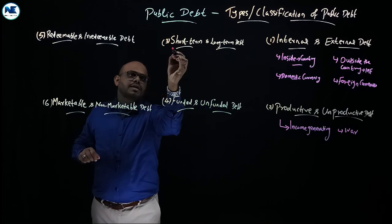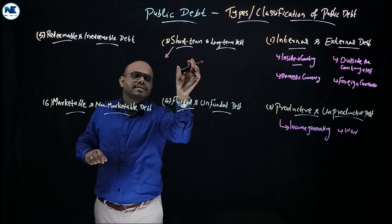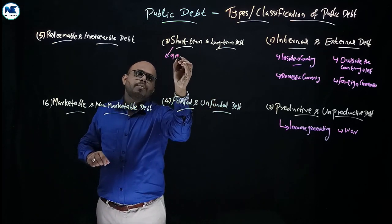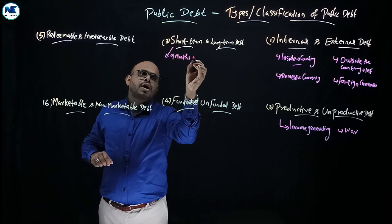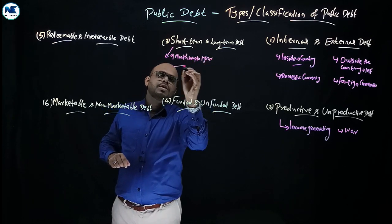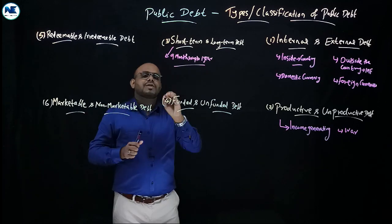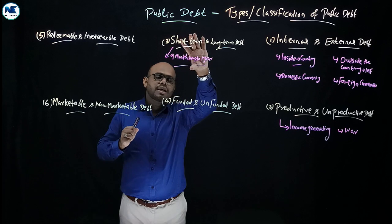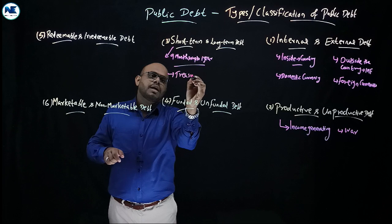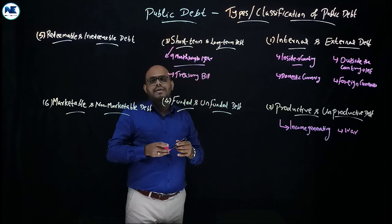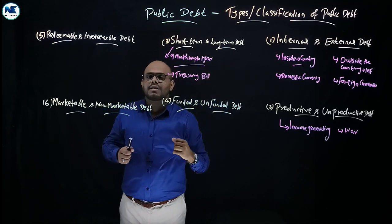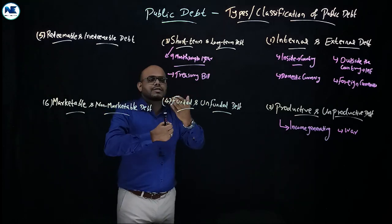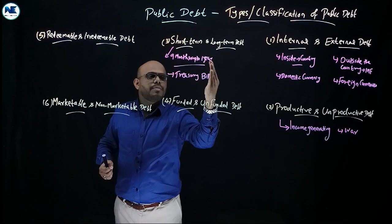The third classification is short-term and long-term debt. Short-term debt is a loan raised for up to one year, or maybe up to nine months — the maturity period is within one year. A best example is treasury bills issued by the government, such as 91-day, 182-day, and 364-day treasury bills.